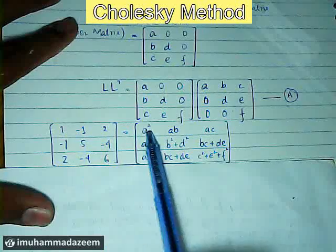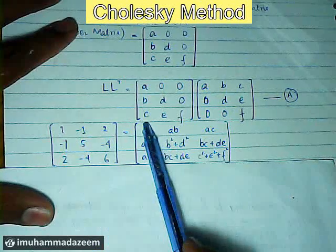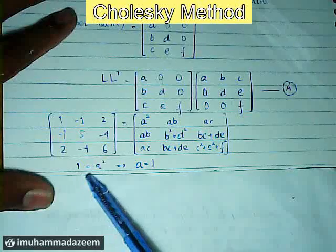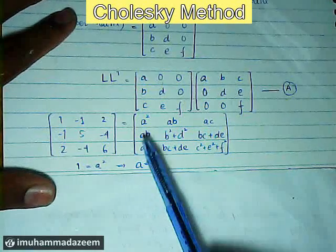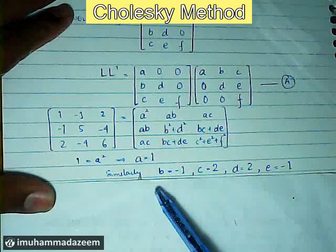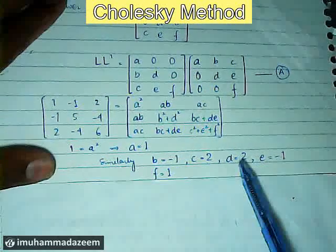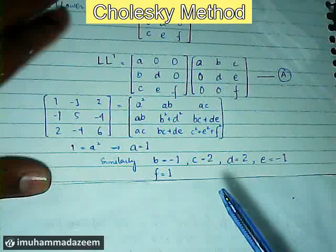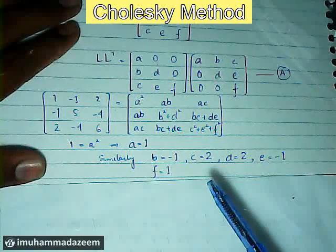The next step is to equate the values element by element. For the first row, first column: a₁ squared equals a, so a equals 1. Similarly, minus 1 equals a times b, which gives us the value of b. We can carry on this procedure to find the values of c, d, e, and f.